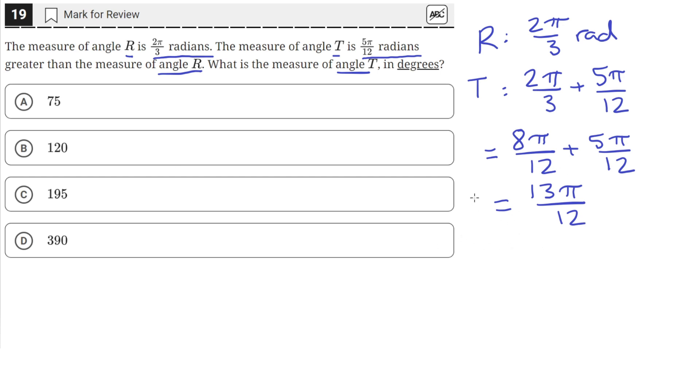So that's the measure of angle T. And then we need to find the measure of angle T in degrees. Well, we know that π radians is equal to 180 degrees.